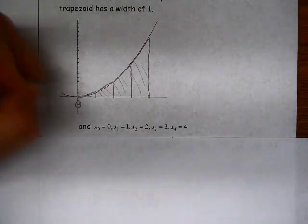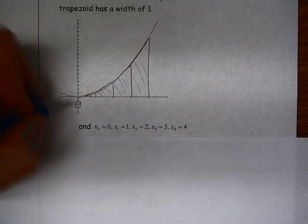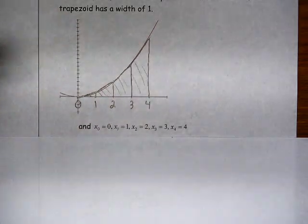In this case, the x values that are delineating our trapezoids are 0, 1, 2, 3, and 4.